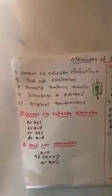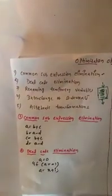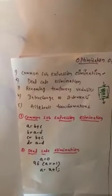The basic block optimization consists of five different types of approaches: first is common sub-expression elimination, second is dead code elimination, third is renaming temporary variables, fourth is interchange of statements, and fifth is algebraic transformations.